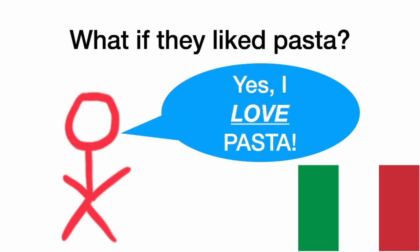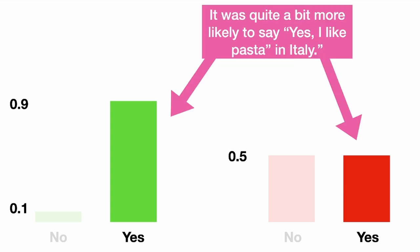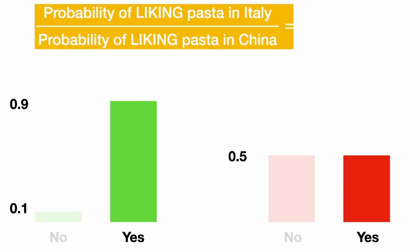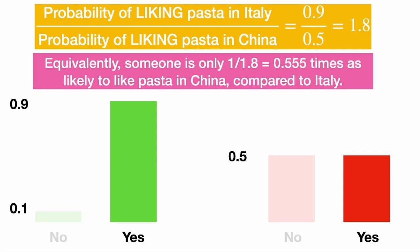But what if they liked pasta? If this person says yes, I love pasta, we still believe we're in Italy. Since they answered yes, let's compare the likelihood of saying yes in each country. It was quite a bit more likely to say yes, I like pasta, in Italy. The probability of liking pasta in Italy was 0.9, and the probability of liking pasta in China was 0.5. So 0.9 over 0.5 is our likelihood ratio, which is 1.8. Someone is 1.8 times more likely to like pasta in Italy compared to China.